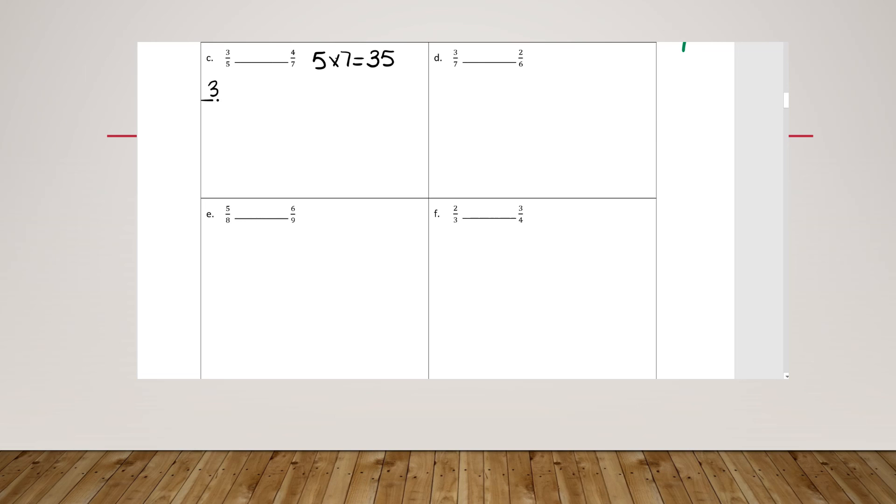So my new denominator needs to be thirty-five. So I'm going to set up my fraction equivalent sentences and find my new fractions with a denominator of thirty-five. And when I fill in the middle, three fifths times something. Five times seven equals thirty-five. And what you do on the bottom, you have to do on the top.